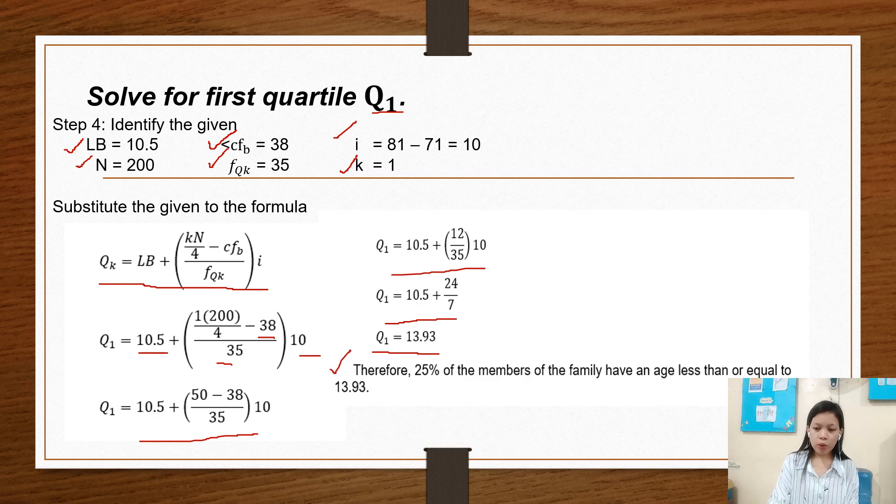Therefore, 25% of the members of the family have an age less than or equal to 13.93.